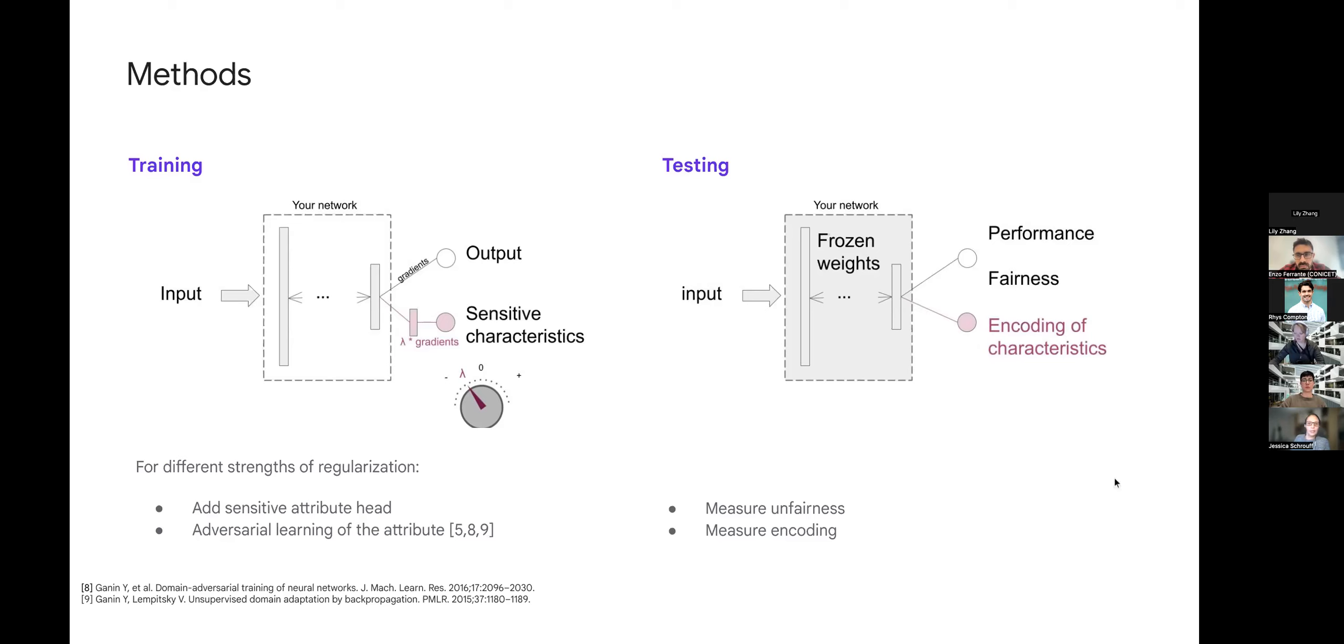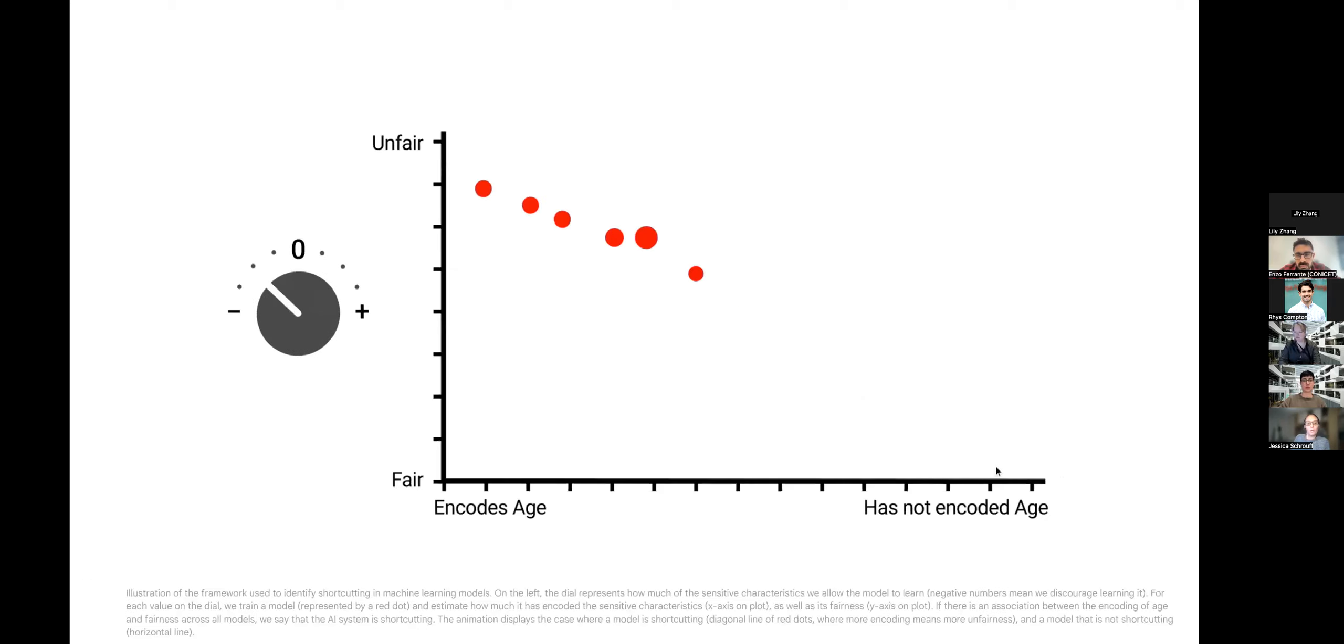What we look at is the correlation between how much the model encodes age as a sensitive attribute compared to how fair or unfair it is. If your model fairness does not vary with differences in encoding, it means whatever level of unfairness you have does not seem to be driven by encoding of age. If you have a strong correlation or anti-correlation depending on your sensitive attribute, your model by relying on the sensitive attribute does create more unfairness.